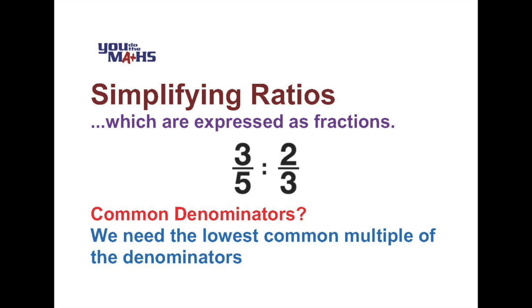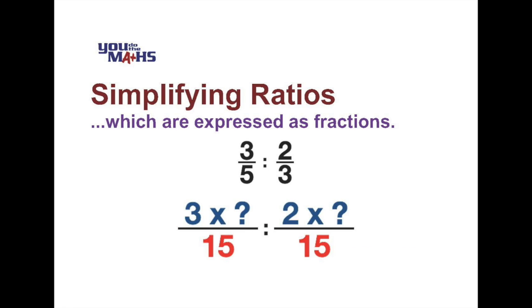So in the first case we can see that for the first fraction, three fifths, to become a fraction over fifteen we have to multiply the top and bottom by three. The second fraction is two thirds, and for that to become a fraction over fifteen we have to multiply the top and the bottom by five.